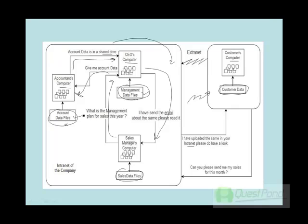The second problem is that if tomorrow the accountant or the CEO is not there, then to get these data files there is definitely an issue, because you have to log in to his PC, take his user ID and password, etc. In other words, there is a personal dependency — only he knows where the data files are.